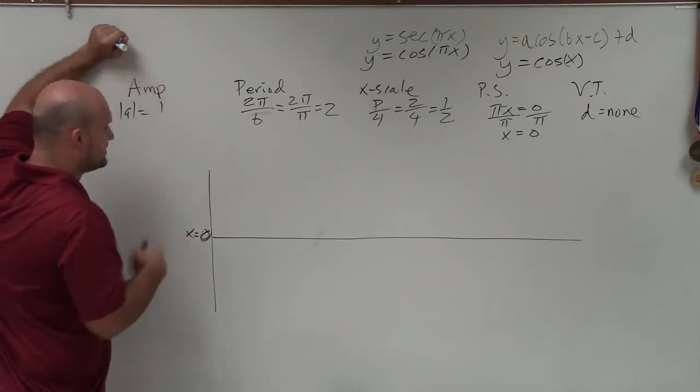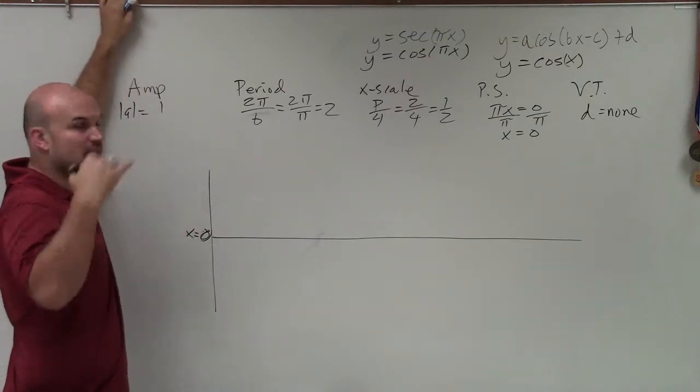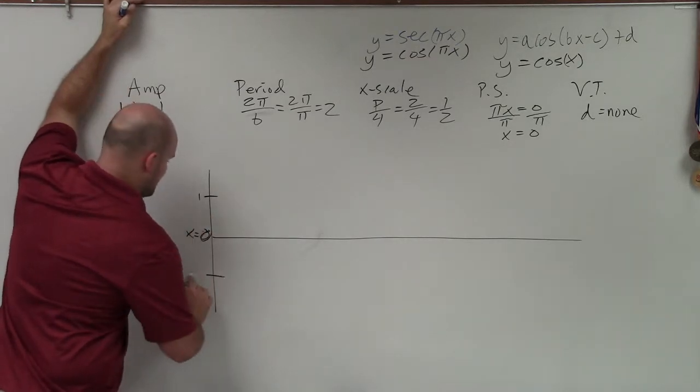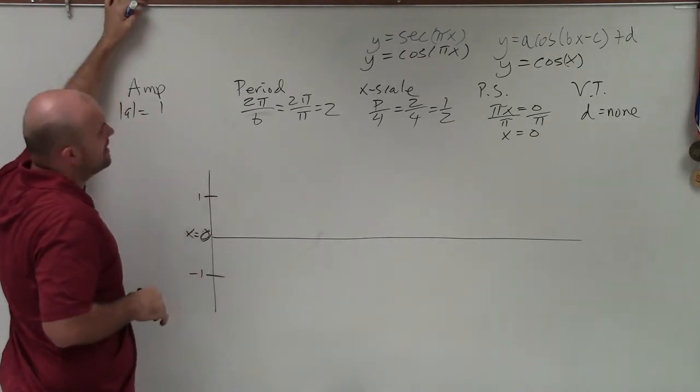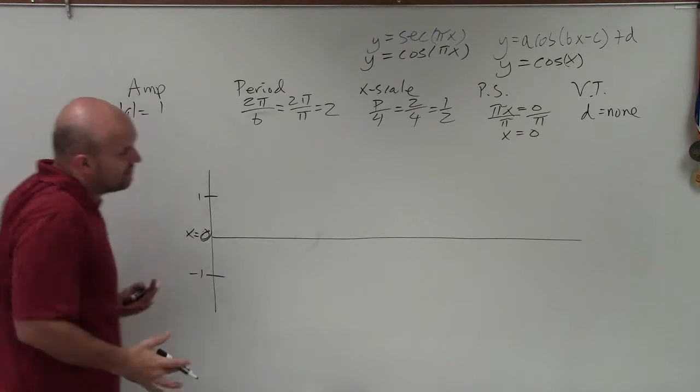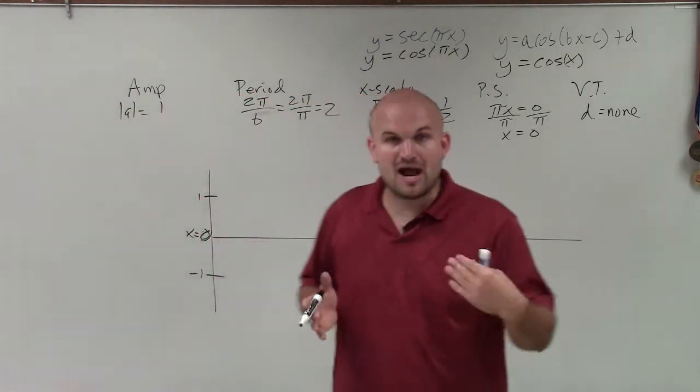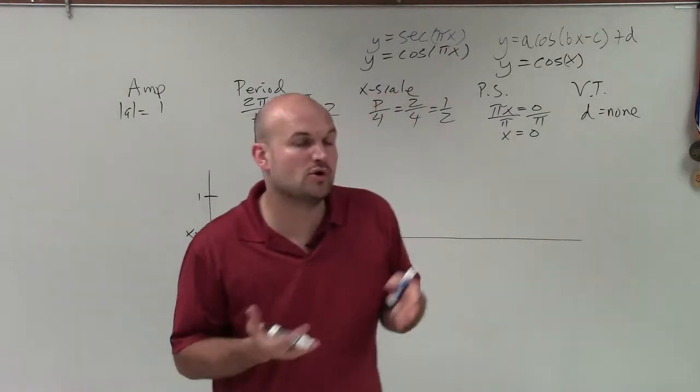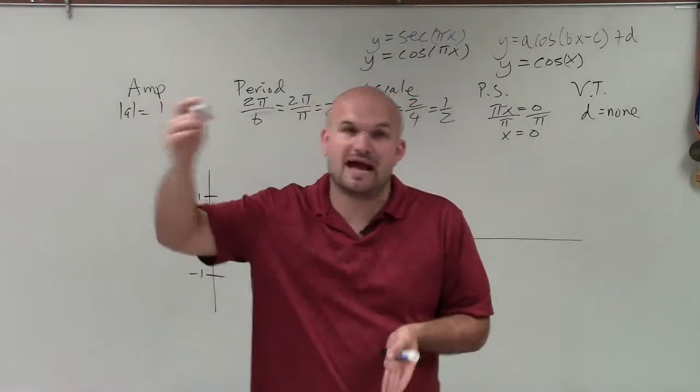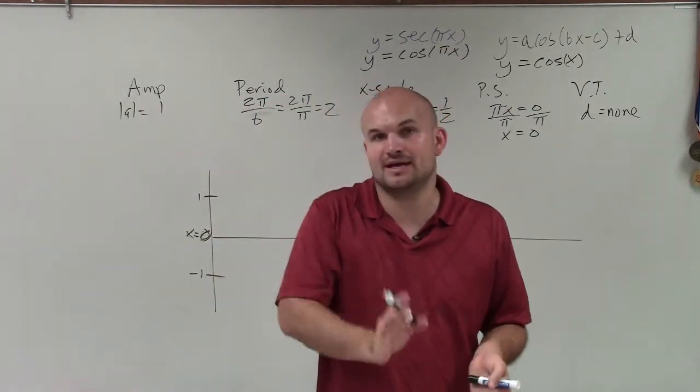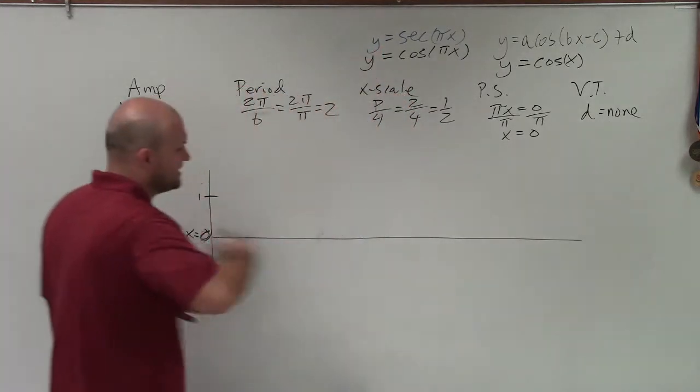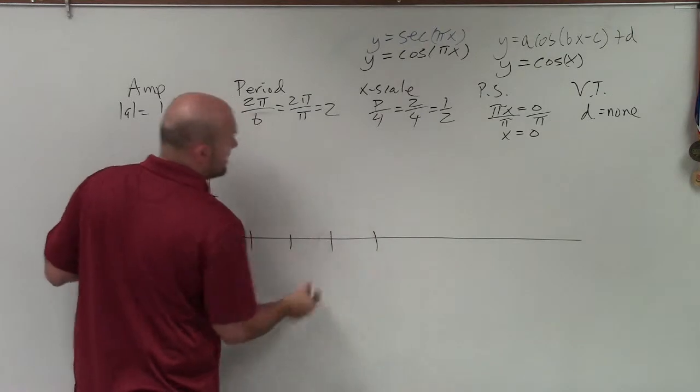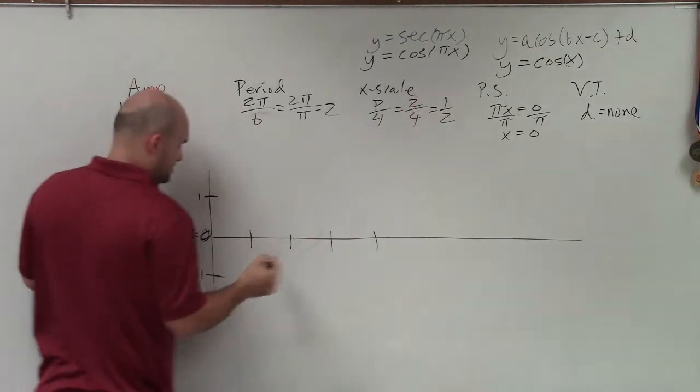Then I look at the amplitude. The amplitude is the half distance from the maximum to the minimum of the graph. So in this case, it's 1. So that means I'm going to go up 1 and down to negative 1. The next thing we want to do is set up our x scale. Now remember, our x scale is going to be the distance between each and every one of our important points. The important points for cosine is going to be the maximum, intercept, minimum, intercept, back up to maximum, and that keeps on repeating. So I have four x scales within a period, and the distance between each x scale is 1 half.